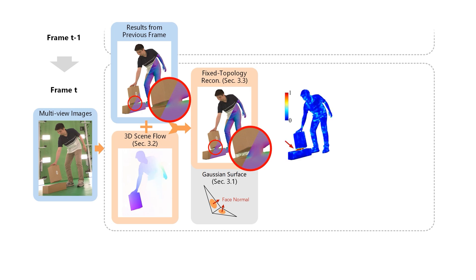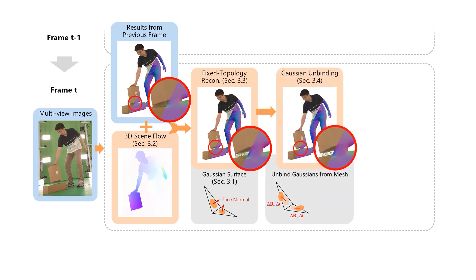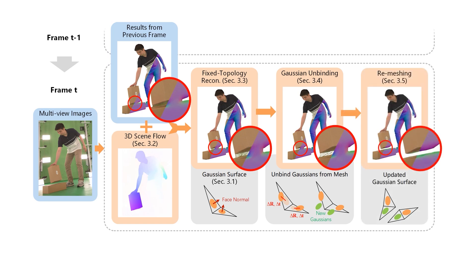To handle topology changes, we first detect them based on positional gradients and reconstruction errors. In these regions, we unbind the Gaussians from their mesh surfaces, allowing them to move more independently. We also introduce additional Gaussians to reconstruct the new surfaces. Finally, we update the mesh in these regions based on the unbound Gaussians, and proceed to the next frame.